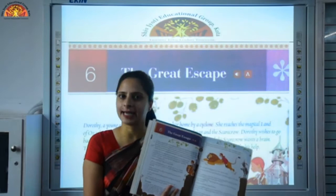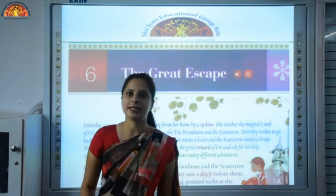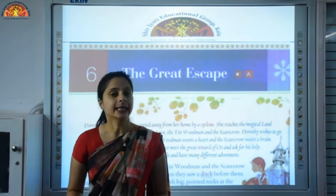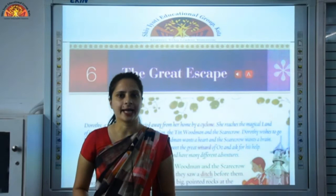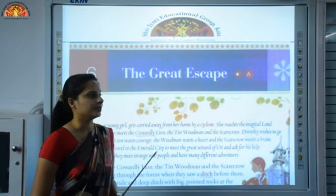In this chapter, you will read about four friends who are walking in the forest and what adventures they came across while walking. This is adapted from a novel, The Great Wizard of Oz, written by L. Frank Baum. Now I will start with the explanation of the chapter, The Great Escape. Escape means to run away.